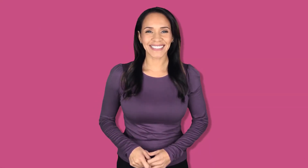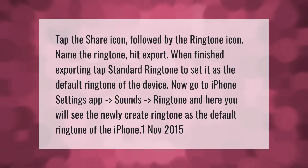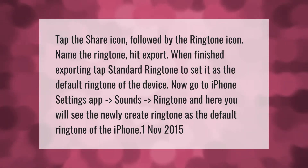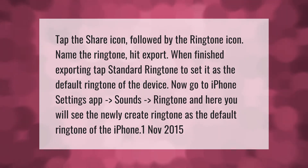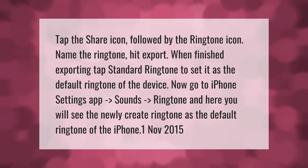Tap the share icon followed by the ringtone icon, name the ringtone, and hit Export. When finished exporting, tap Standard Ringtone to set it as the default ringtone of the device. Now go to iPhone Settings, then Sounds, then Ringtone, and here you will see the newly created ringtone as the default ringtone.